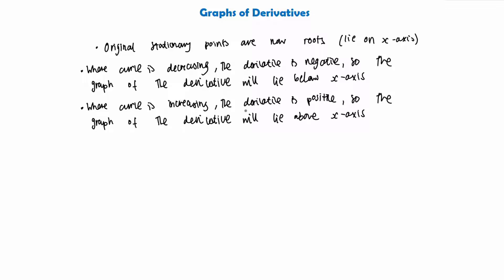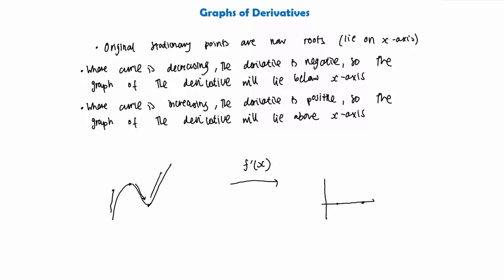So these are the three things we need to look at when given a graph of a curve: the stationary points which become roots, where the curve is decreasing meaning the derivative is negative and sits below the x-axis, and where the curve is increasing meaning the derivative is positive and sits above the x-axis. We'll look at a few examples here.